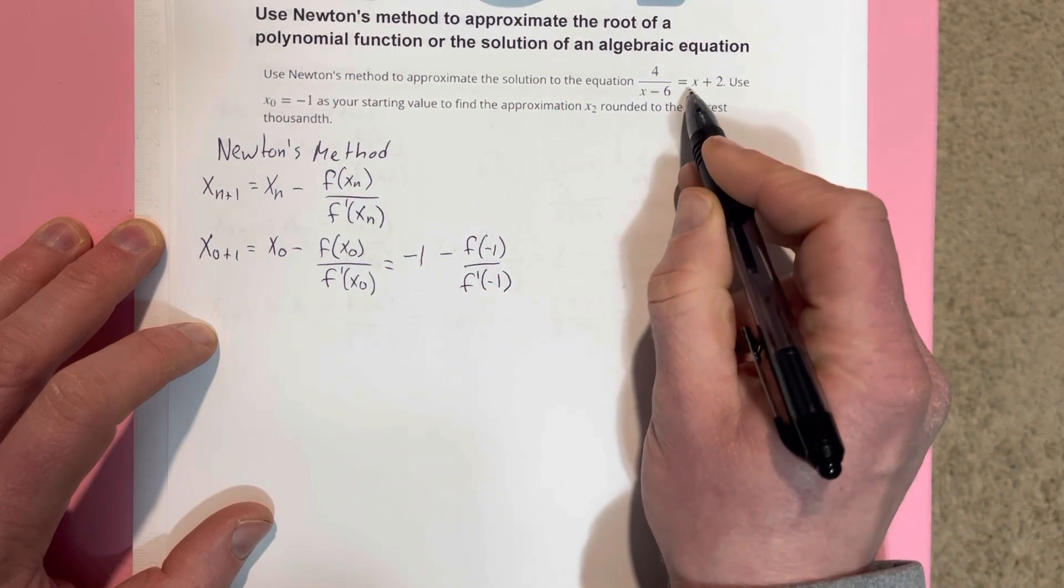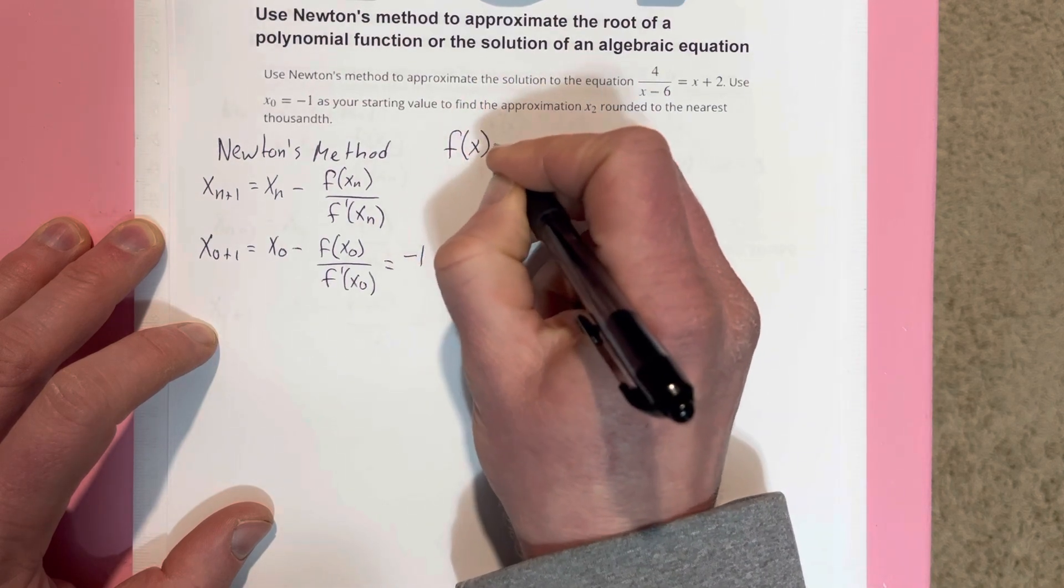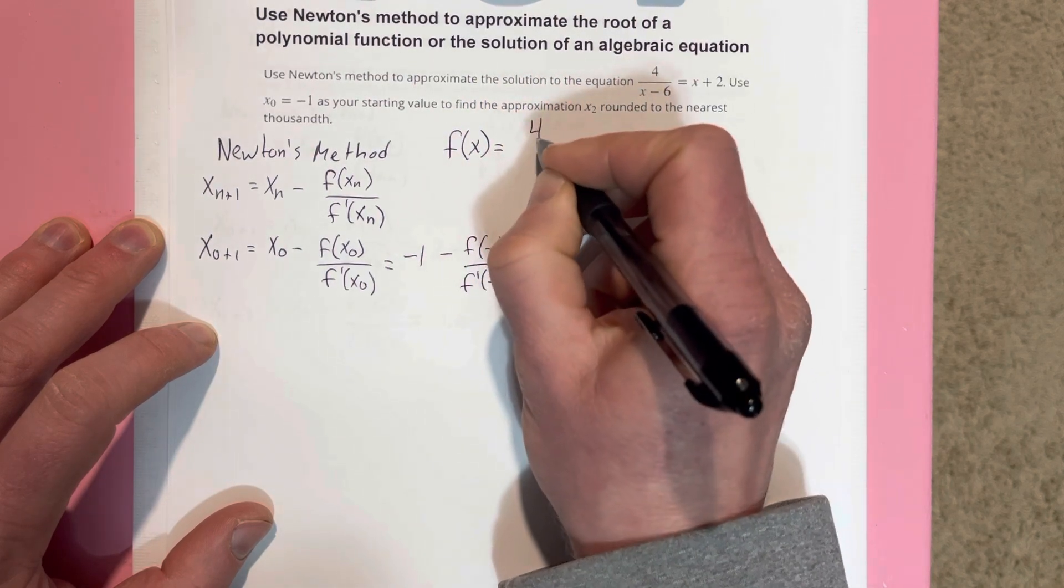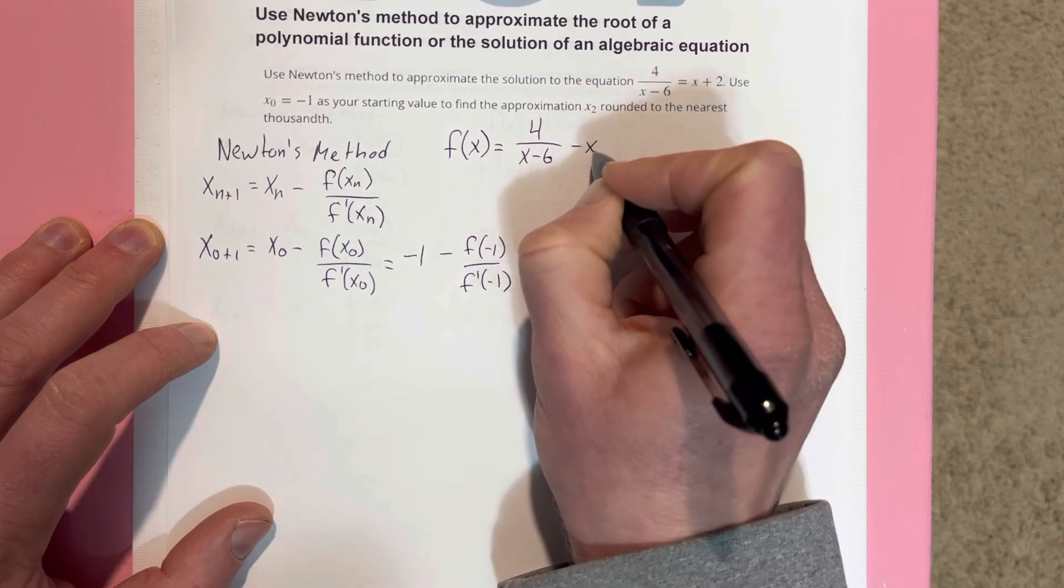I'm going to subtract the x and the 2 over and rewrite this as f(x) is equal to 4 over x minus 6 minus x minus 2.